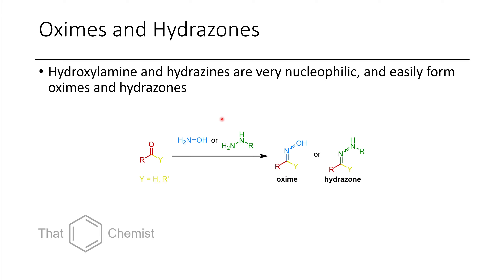Another class of nitrogen nucleophiles that form imine-type substrates are hydroxylamine and hydrazines. If hydroxylamine reacts with a ketone or an aldehyde, it forms what's called an oxime. If hydrazine reacts with an aldehyde, you form what's called a hydrazone. Hydrazones are commonly used — for example, dinitrophenylhydrazine — to confirm the identity of an aldehyde or ketone product. This is an old-school way of testing for the presence of carbonyls.